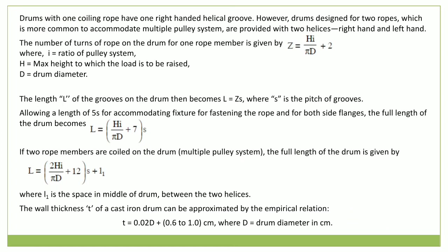These drums for steel wire ropes are generally made of cast iron, but may also be made from steel castings or fabricated from steel plate. The drum diameter depends on the diameter of the rope chosen. When the drum is rotated by a motor, helical grooves are provided on the face of the drum so that the rope winds up uniformly and with minimum wear. Drums with one coiling rope have one right-handed helical groove; however, drums designed for two ropes — which is more common to accommodate a multiple pulley system — are provided with two helices, one right-hand and one left-hand.